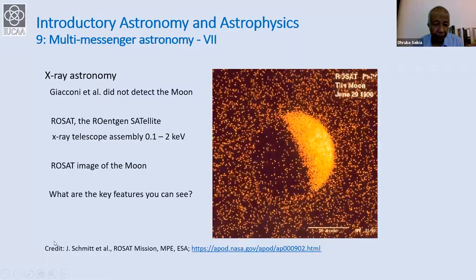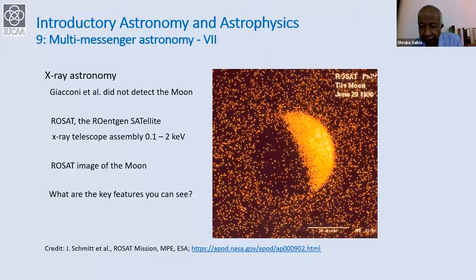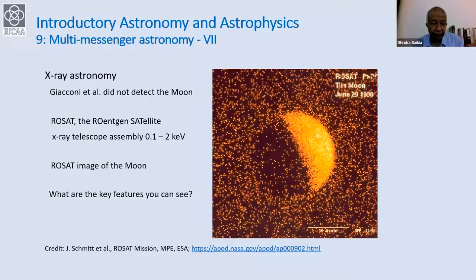While Giacconi and collaborators were trying to detect X-rays from the moon, they did not succeed, but this is an image taken by a satellite much later — the ROSAT satellite, named after the discoverer of X-rays, William Röntgen. ROSAT was operating in the soft band of 0.1 to 2 keV, and this is the ROSAT image of the moon. What are the key features of this image?